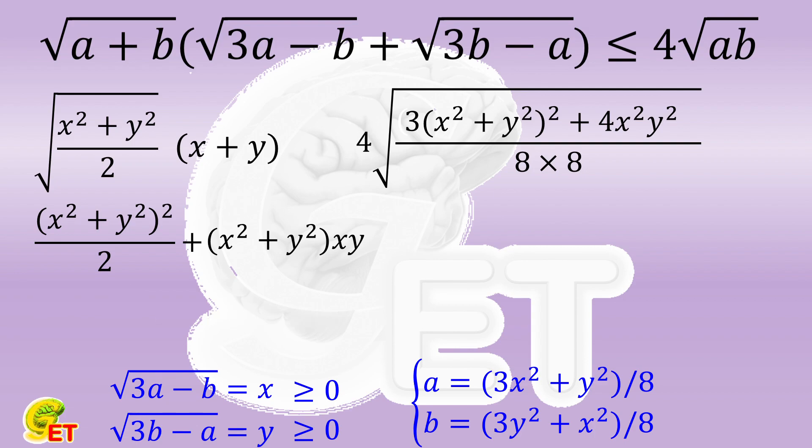Addressing the right side is pretty straightforward. So we have 3 quarters times the square of X squared plus Y squared, plus X squared times Y squared.